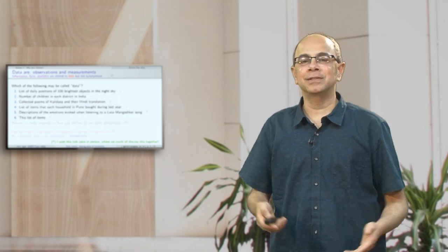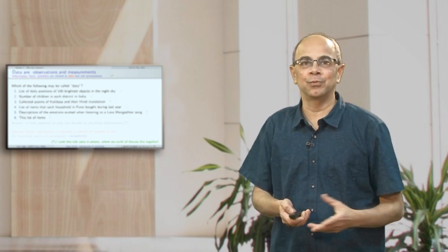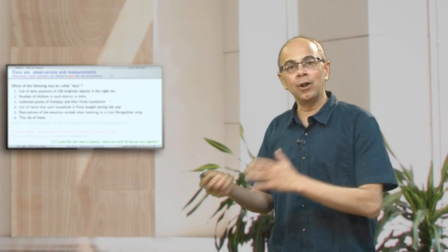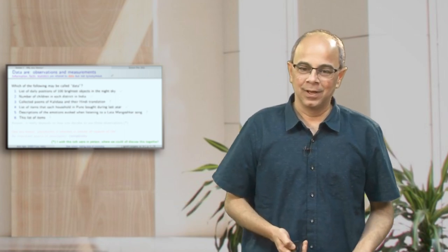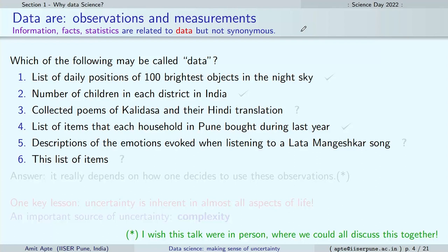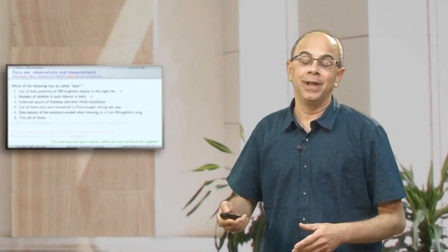Here is a list of things we may come across in various places — let us figure out whether each can be called data or not. In general, data are observations and measurements; when used in data science, we want to do something with them. For example, a list of daily positions of stars is used for quantitative purposes — so it is data. The number of children, if you want to study education in India, would be a useful piece of data.